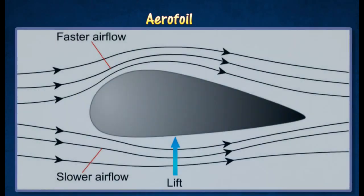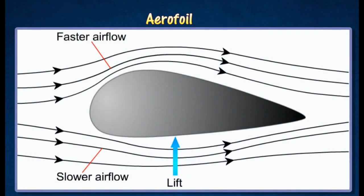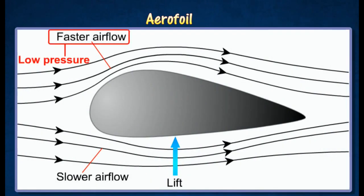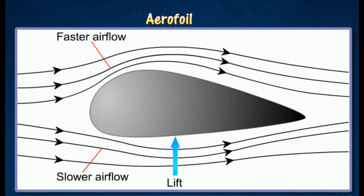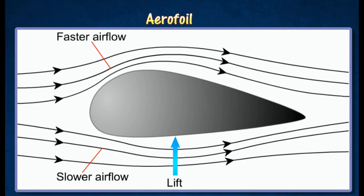The figure shows an airfoil with the leading edge that is rounded and a pointed trailing edge. The airflow above the airfoil is faster than the airflow below it, so there is lower air pressure above the airfoil. The pressure difference between the air below and above the airfoil produces a resultant upwards force known as a lift.